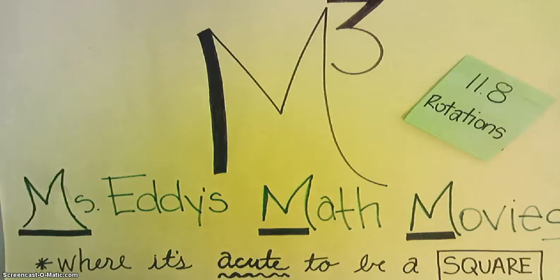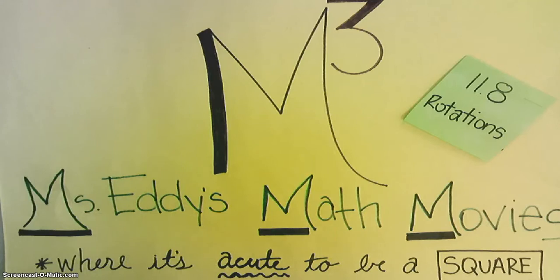Welcome back to Massetti's Math Movies, where it's acute to be a square. Today's lesson is 11.8 rotations. By the end of the lesson, you'll be able to identify rotations and rotational symmetry.